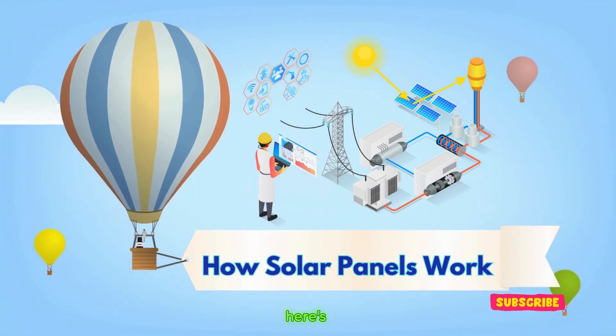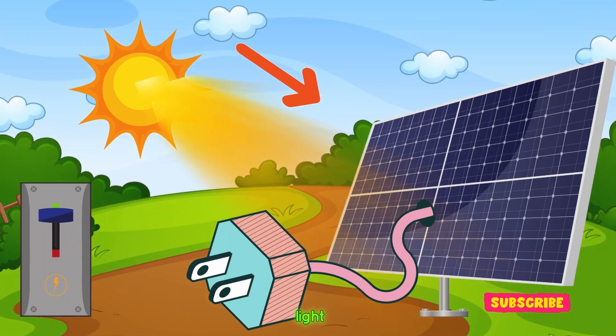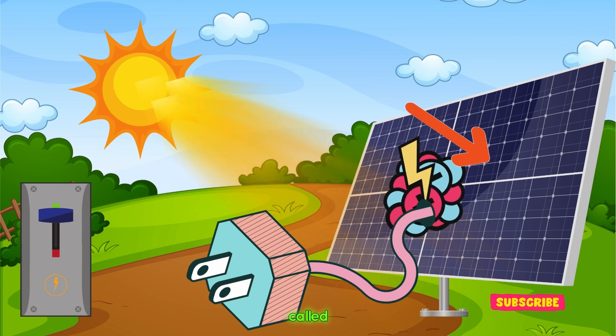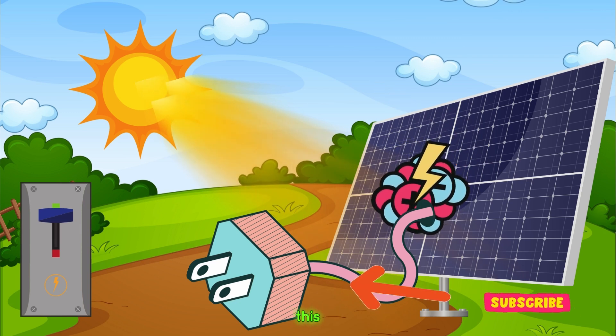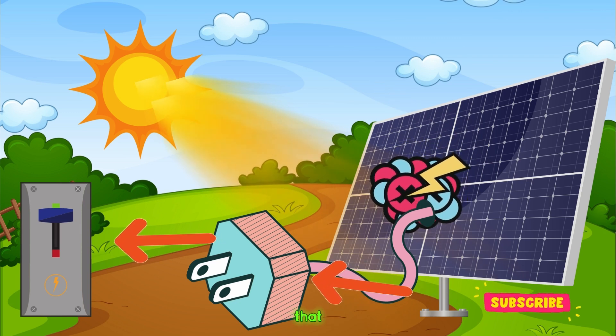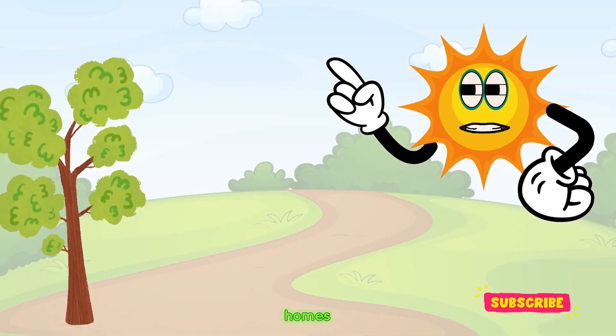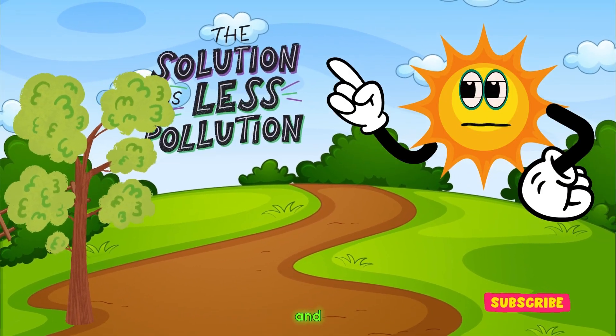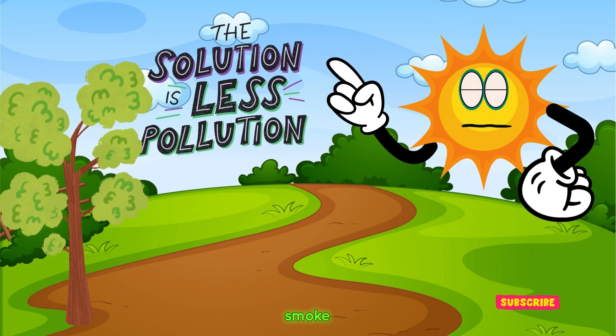How solar panels work. Here's how it works. Sunny's light hits the solar panels, and inside, little particles called electrons start moving. This movement creates electricity that flows through wires to your homes. And the best part is, it's clean and green. No smoke or pollution.